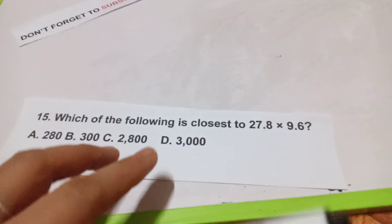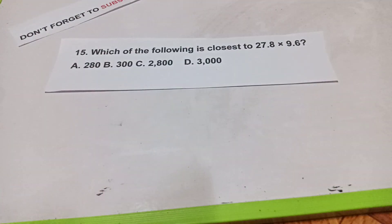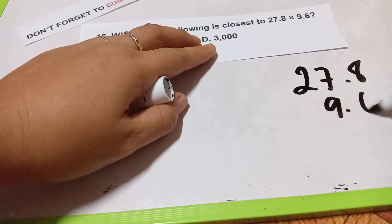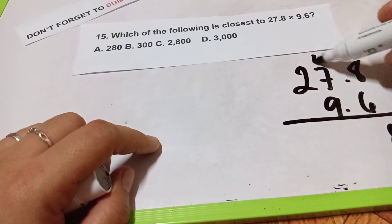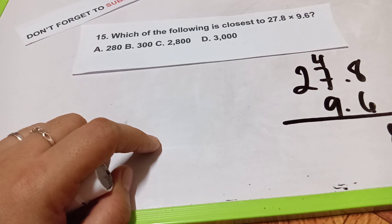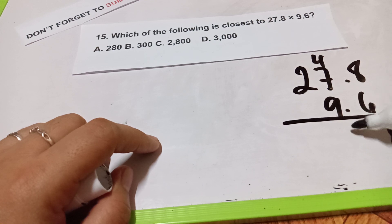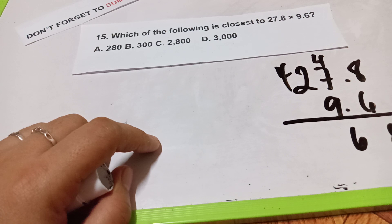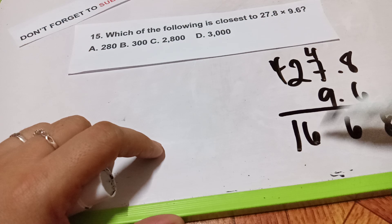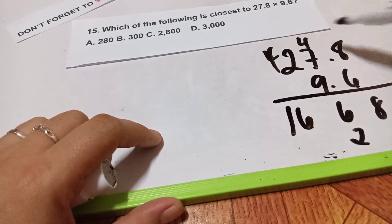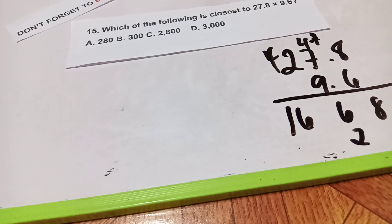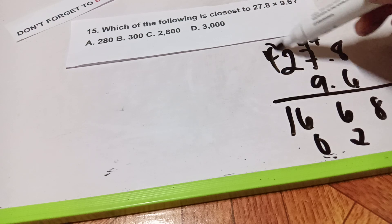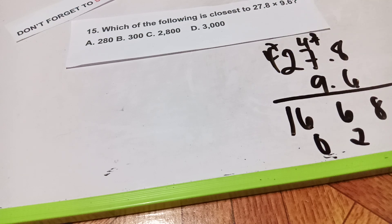Question number 15: 27.8 times 9.6. To multiply decimals: 8 times 6 is 48, 7 times 6 is 42 plus 4 is 46, 2 times 6 is 12 plus 4 is 16, 9 times 8 is 72, 9 times 7 is 63 plus 7 is 70, carry 7. 9 times 2 is 18, plus 7 is 25.